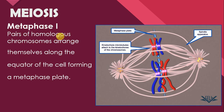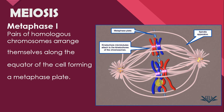Next is Metaphase 1. Pairs of homologous chromosomes arrange themselves along the equator of the cell, forming a metaphase plate. Metaphase 1 of meiosis is different from metaphase of mitosis in the sense that in mitosis single chromosomes arrange themselves on the metaphase plate, jabke meiosis ke metaphase mein chromosomes pairs ki form mein khud ko equator par arrange karte hain.